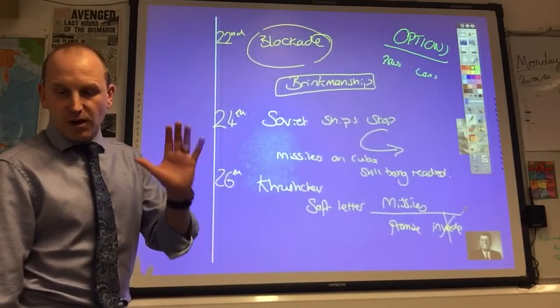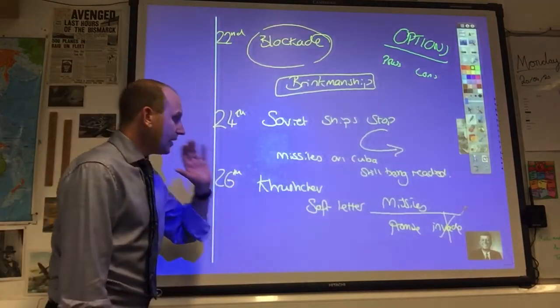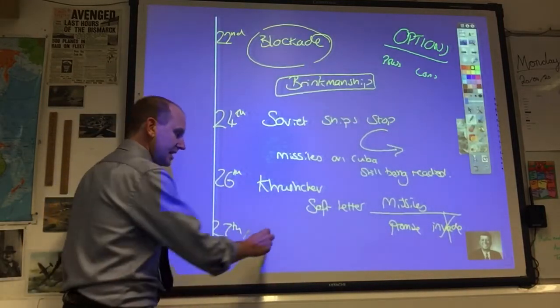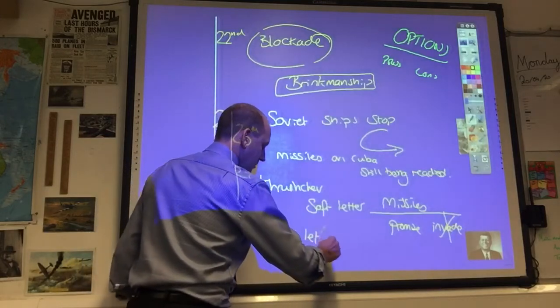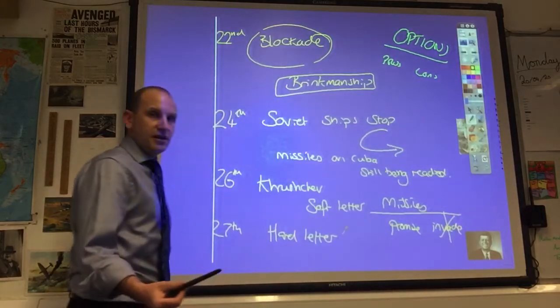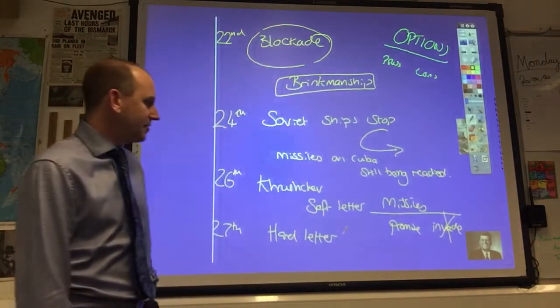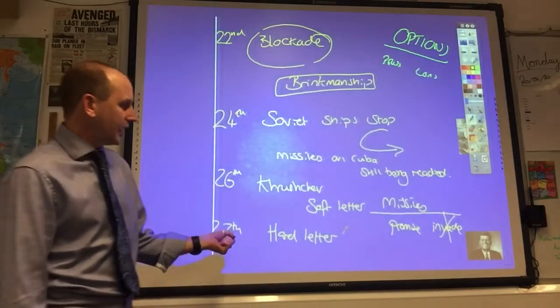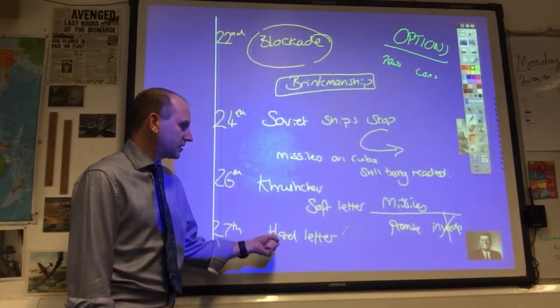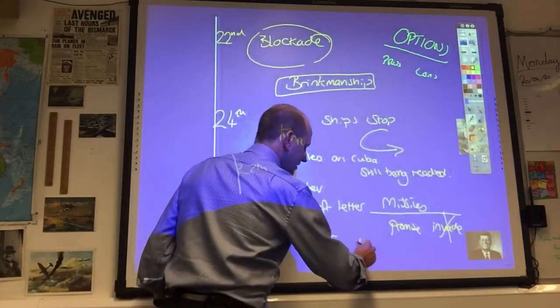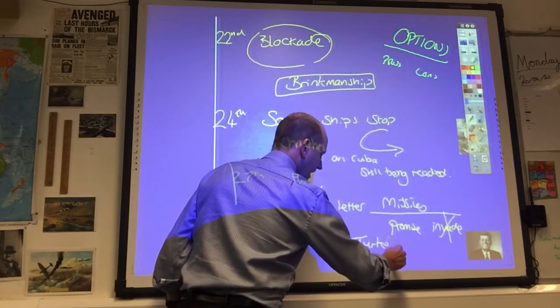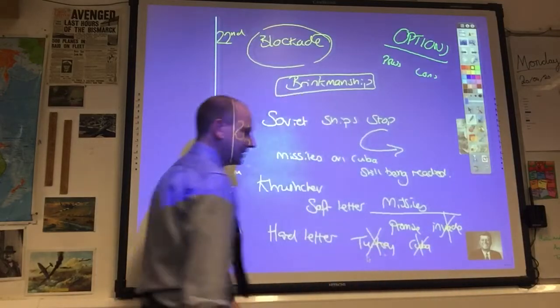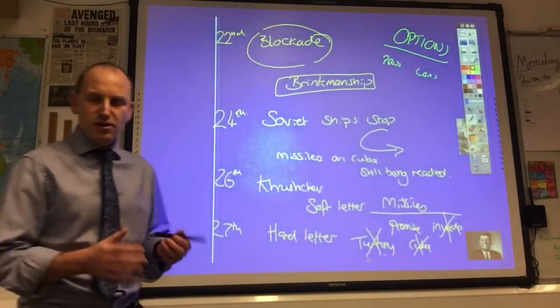Whilst the ExComm are debating this and talking about this, on the 27th they get another letter, you might call that one a hard letter. Perhaps Khrushchev has a change of heart, they never really know. Perhaps some hardliners in the government have kicked Khrushchev out. Again, the Americans just don't know this at the time because there was so little communication between the two sides. And this one drives a much tougher bargain and it says we want your Jupiter missiles out of Turkey in exchange for the Cuban missiles. And that would be a humiliating climb down for the Americans and would not look good for the Kennedys.